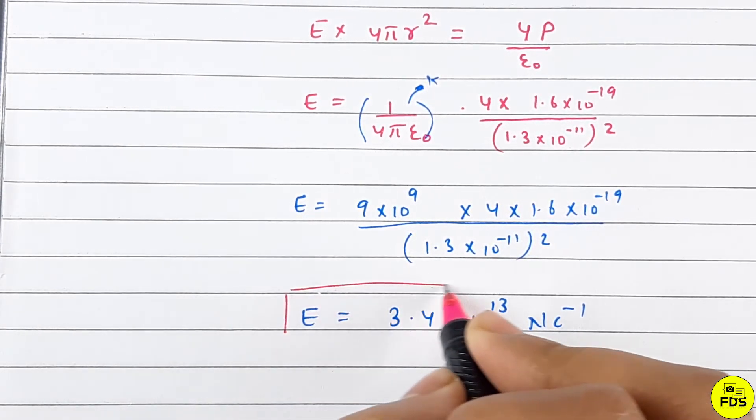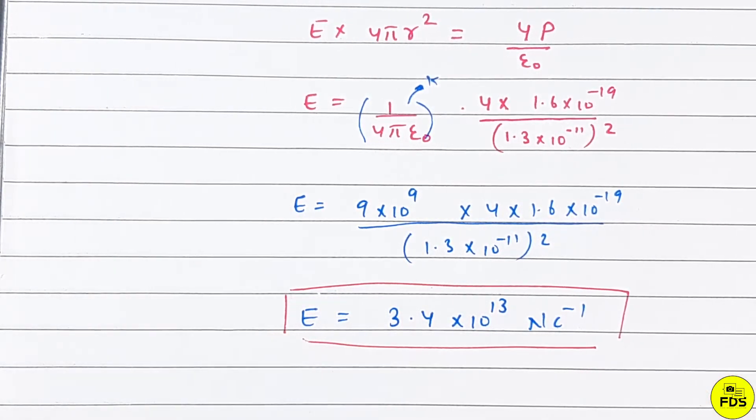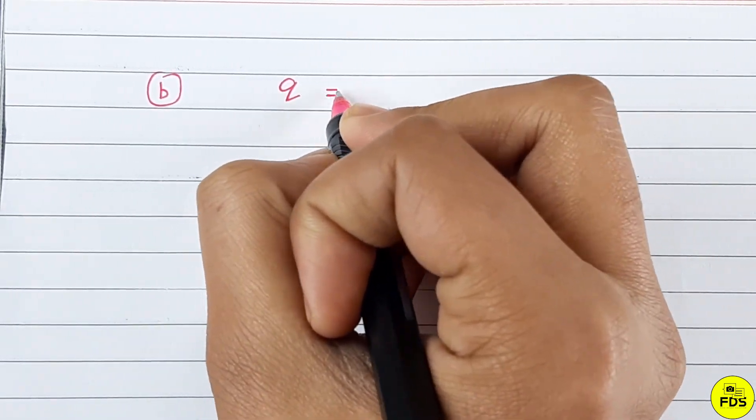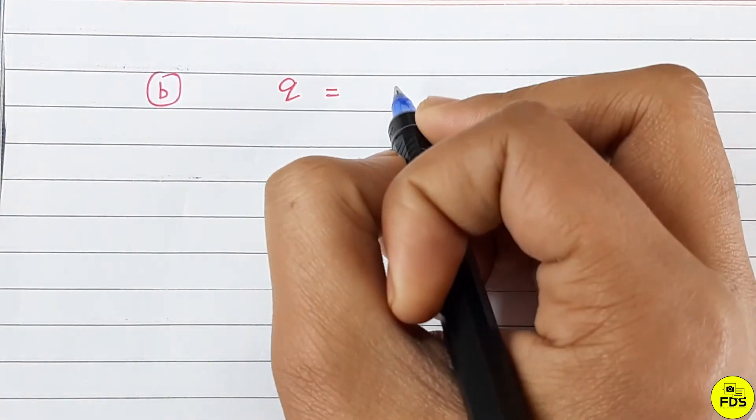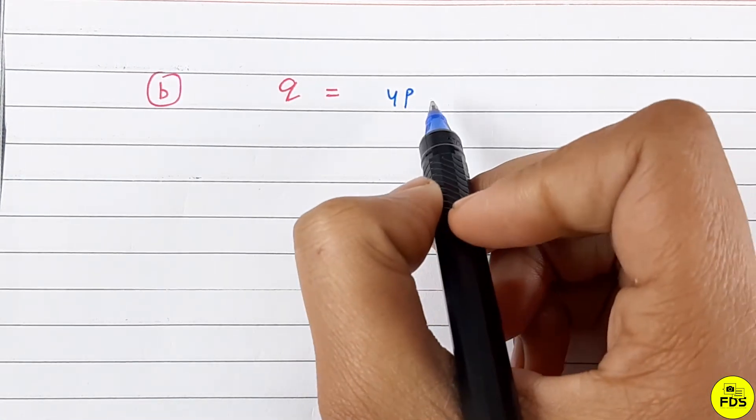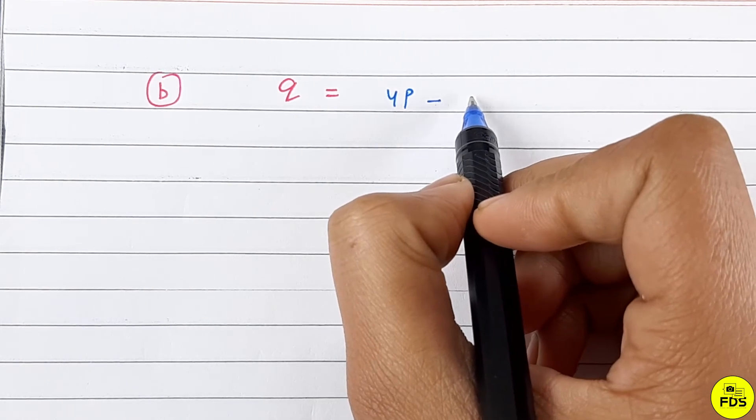Now for part B. Here the charge is not the same - it will be the charge of 4 protons minus the 2 electrons in the 1s cloud.